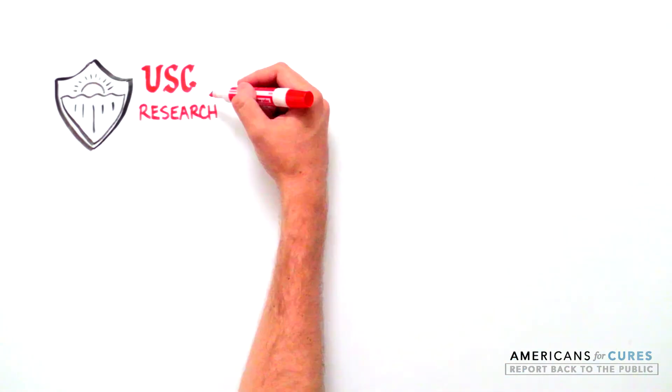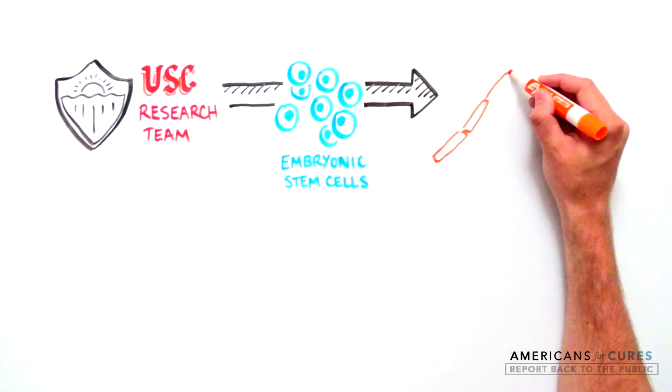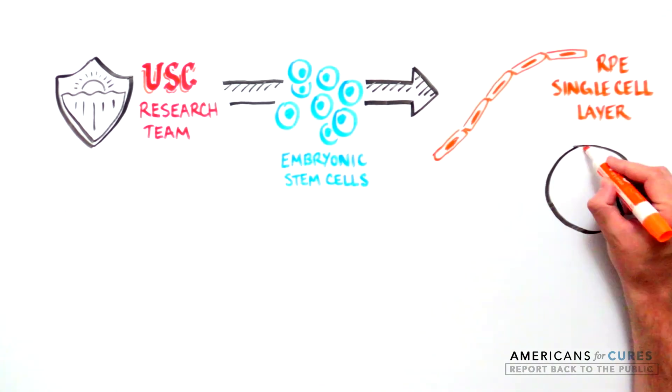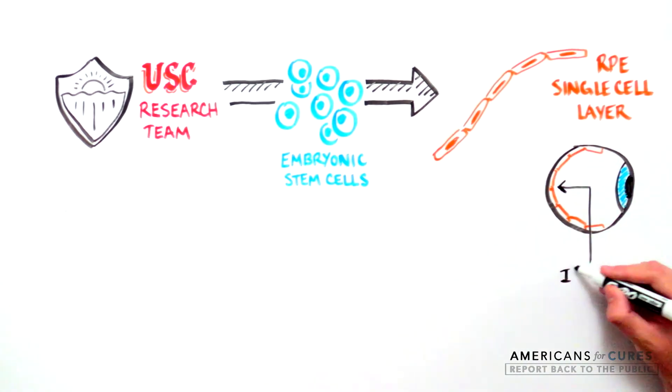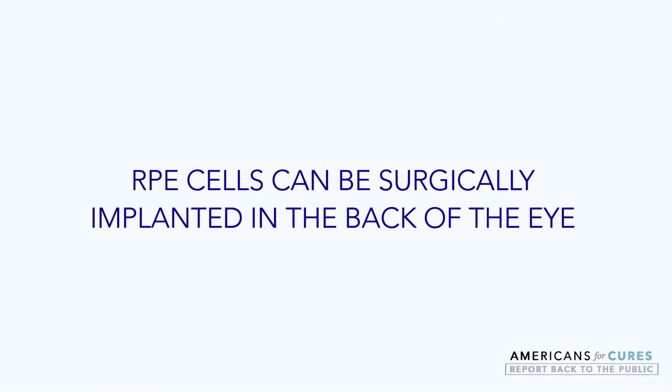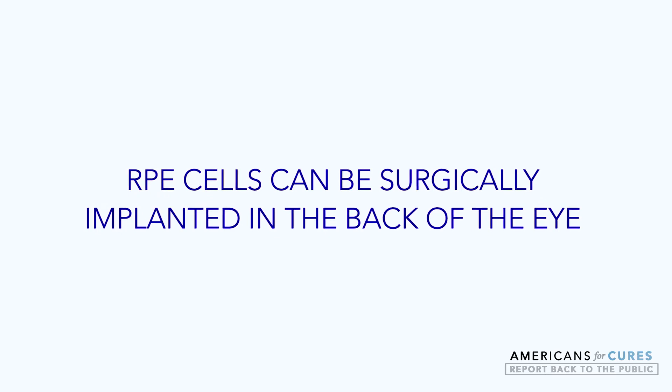The researchers are using embryonic stem cells to generate RPE cells. These RPE cells can be grown as a very thin sheet, only a single cell in depth, and then surgically implanted into the back of the eye on a micro scaffold, where they can functionally replace damaged RPE cells.